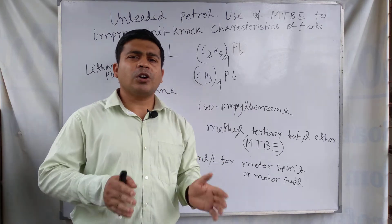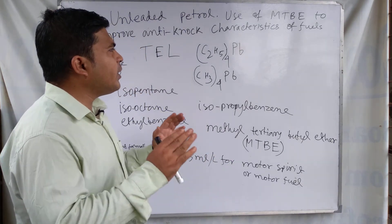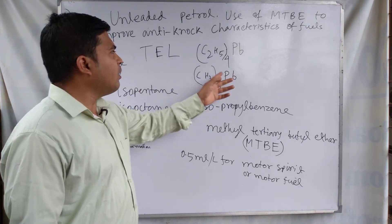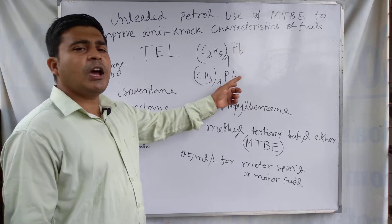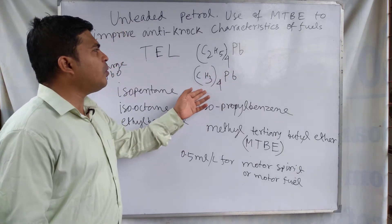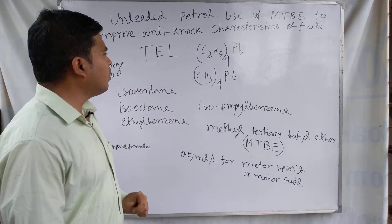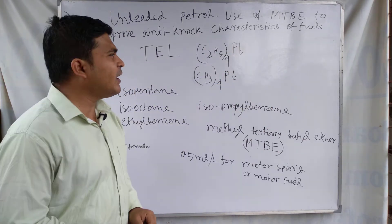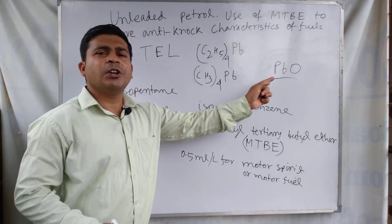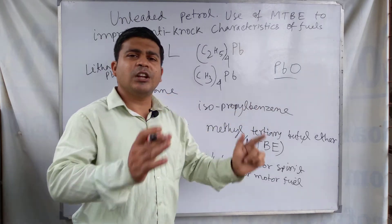If the octane number or octane rating is not increased in the fuel, an explosive violation — knocking — occurs in the engine. For this reason, anti-knocking agents like tetraethyl lead or tetramethyl lead are used. But the problem is that after burning this compound in the internal combustion engine, lead oxide is formed and deposited in the cylinder, jamming the piston.